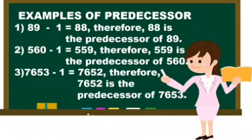Predecessor of 89. That means you have to subtract 1 from 89. The answer is 88. That means 88 is the predecessor of number 89.